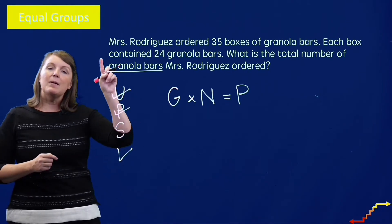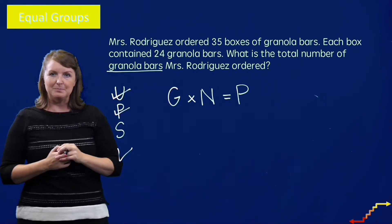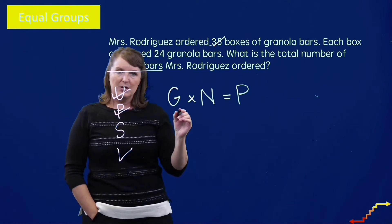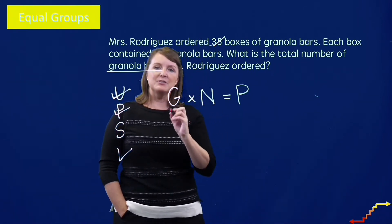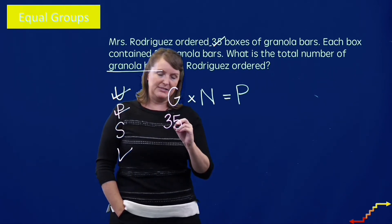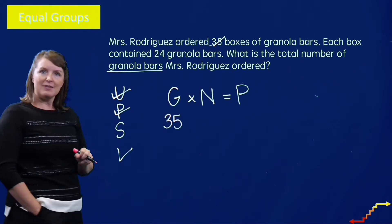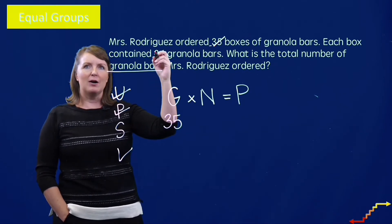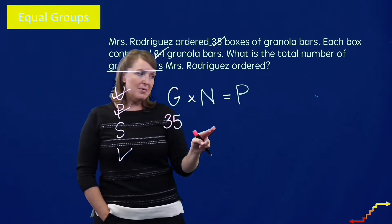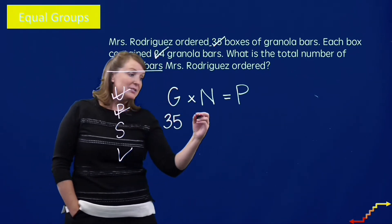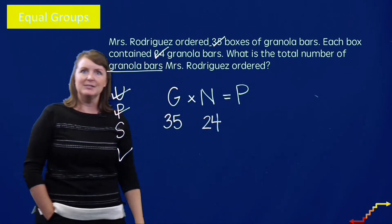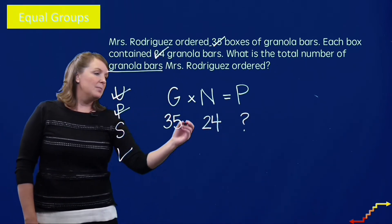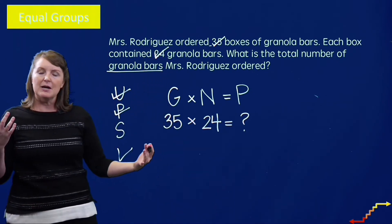Now I'll set up and solve it using my equal groups equation: groups times the number in each group equals the product. Mrs. Rodriguez ordered 35 boxes of granola bars — 35 tells us about the groups, so I write 35 under G. Each box contains 24 granola bars — 24 tells us how many are in each box, so that's the N, the number in each group. Our job is to figure out the product. I'll write in the multiplication sign and equal sign.